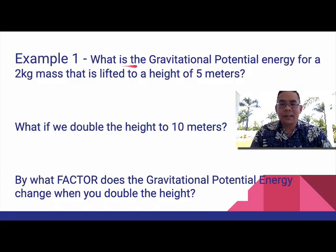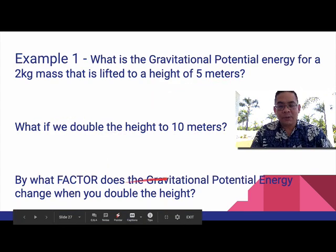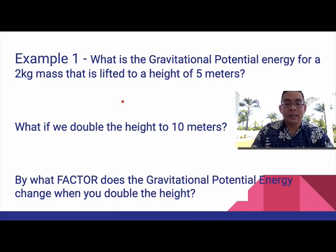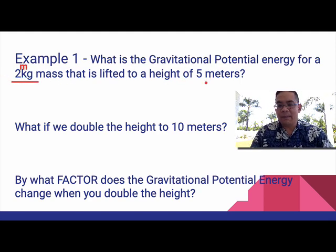So example 1 says, what is the Gravitational Potential Energy for a 2 kilogram mass that is lifted to a height of 5 meters? What if we double the height to 10 meters? By what factor does the Gravitational Potential Energy change when you double the height? Alright, so when looking at this, let's look at our given. So our given is, we got mass, 2 kilograms. We got a height of 5 meters.